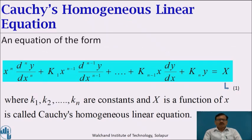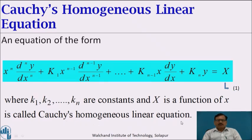Now we'll see what is Cauchy's Homogeneous Linear Equation. An equation of the form x^n · d^n y/dx^n + k₁ x^(n-1) · d^(n-1)y/dx^(n-1) + ... + k_(n-1) · x dy/dx + k_n y = X, where k₁, k₂, k₃, ..., k_n are constants and X is a function of x, is called Cauchy's Homogeneous Linear Equation.